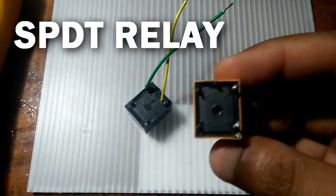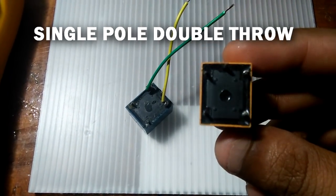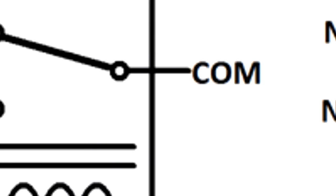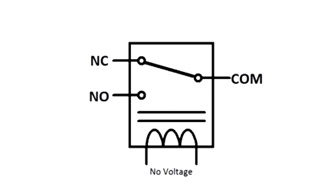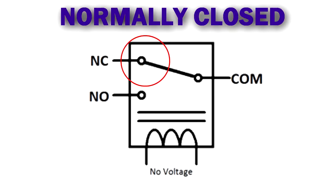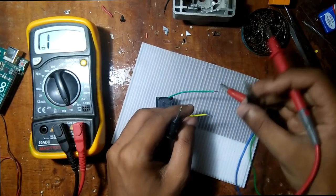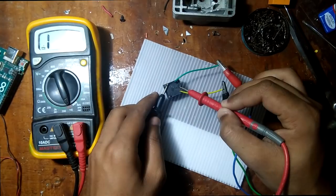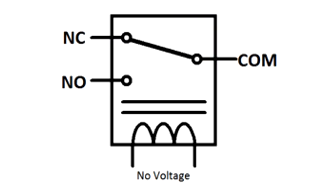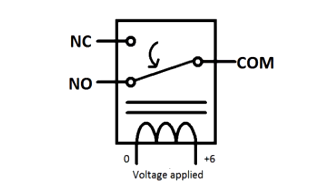This relay is a SPDT relay, single pole double throw. This means it has one common point and two other points which are normally open (NO) which is always open, and normally closed (NC) which is always closed and conducting. When we apply current to the electromagnet terminal, the polarity of these points changes and normally open becomes normally closed.